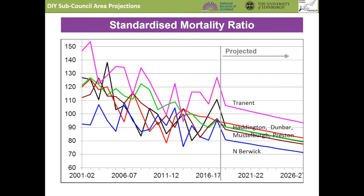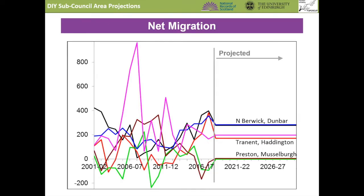And then migration. The training projection shows that some wards tend to have more in-migration in net terms than others. Some years seem atypical with particularly high in-migration or out-migration. The assumption for the future can take a set of recent years that seem typical or likely to be continued. Here it is Dunbar that has higher in-migration than other wards, for example Preston and Musselburgh, that have hardly any impact of net migration on the total population. There may be different patterns for younger and older people and PopGroup captures these differences for each area from its population change in the past two decades.